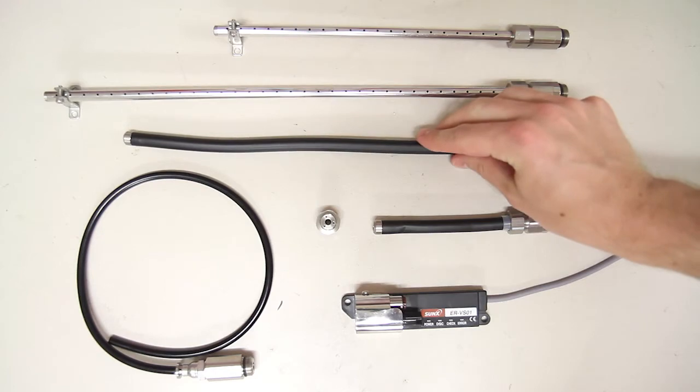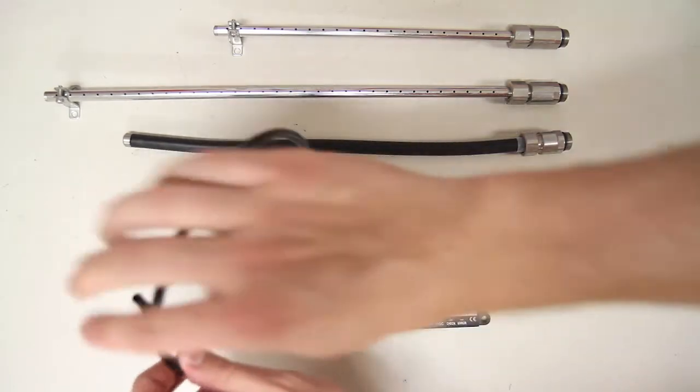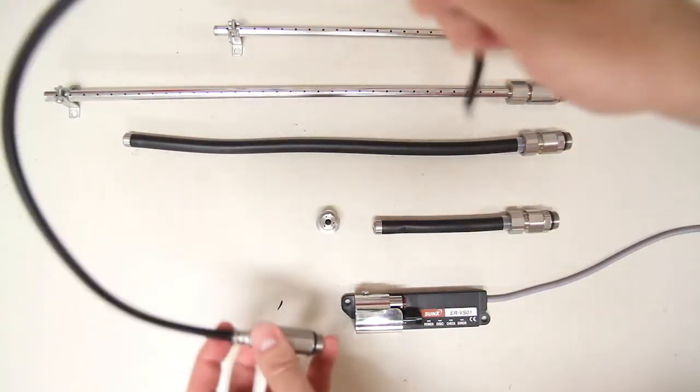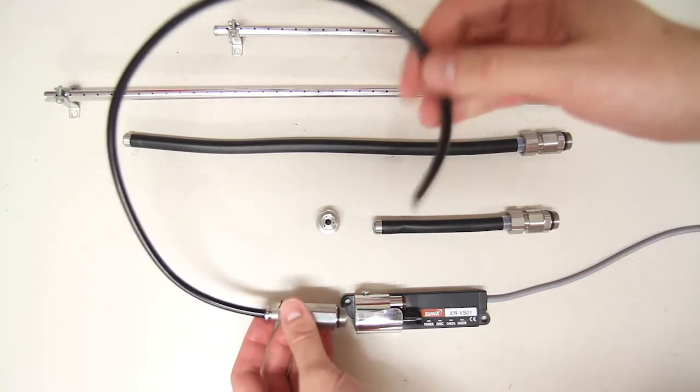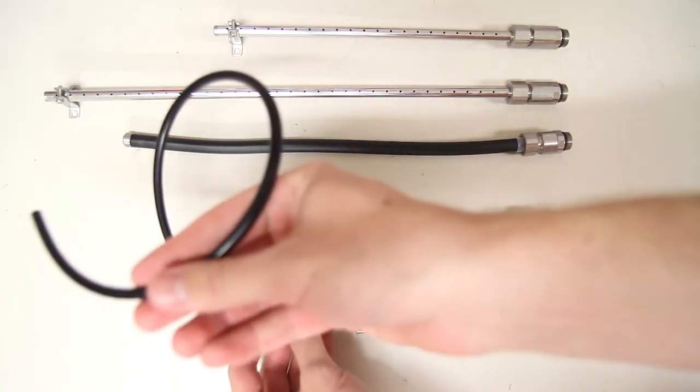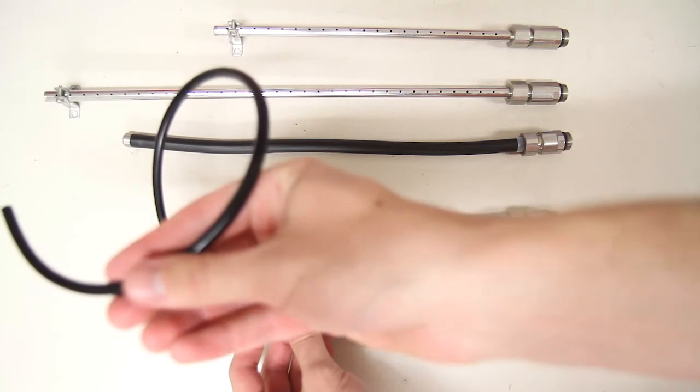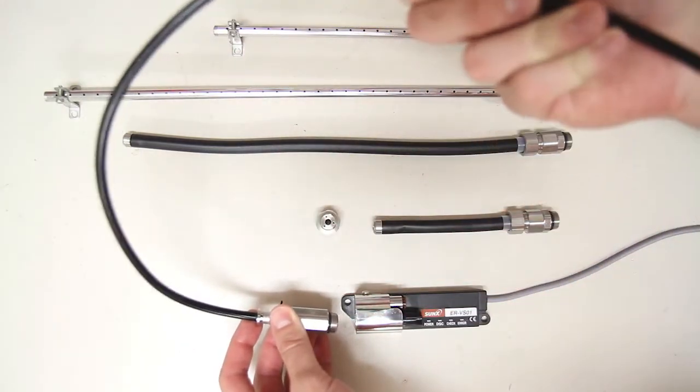Now if I need something that's more flexible than that, we do have a flexible tubing. It's more of just a conductive tube. Now let's say I want to remotely mount my ionizer and then I need to route my air feed to someplace else in my machine. I can do that using this particular tubing.